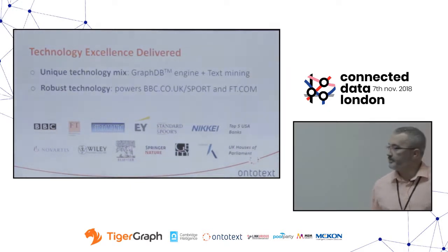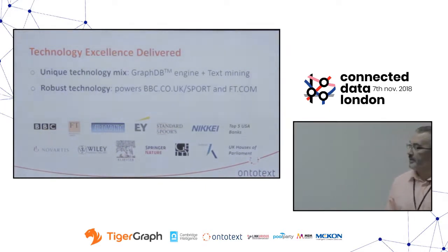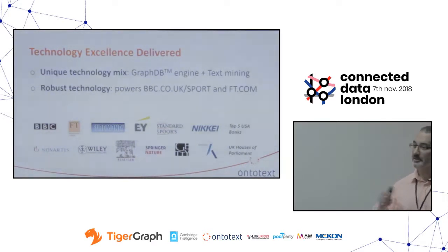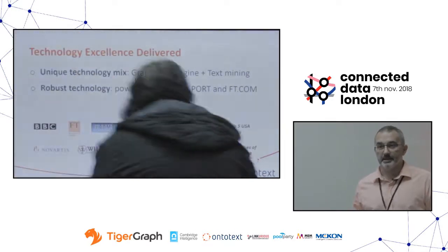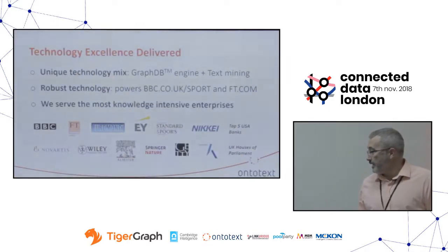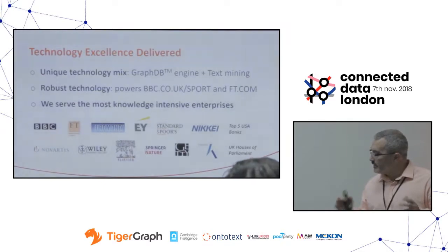We had the chance to do a lot of advanced research when we started and then in the last 10 years we've been productizing these fancy algorithms — technology, inference, and machine learning — to make them robust enough to back something like a Financial Times website or BBC website, and quite a number of others. That's a selection of our users.